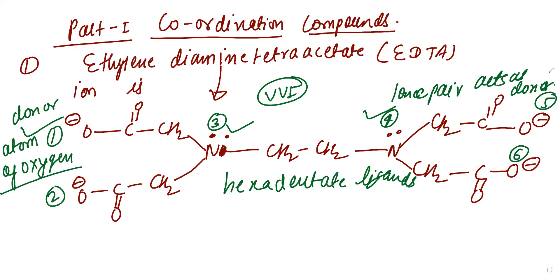Nitrogen atom contains lone pair of electron while oxygen carries negative charge which can donate to metal or metal ion. So total 6 donors. Answer is hexadentate ligand with 4 oxygen atoms and 2 nitrogen atoms act as donor. So B option. Asked in 2021.